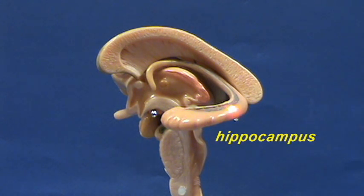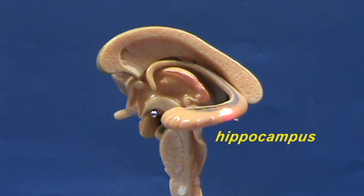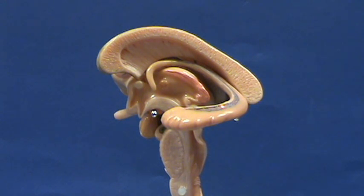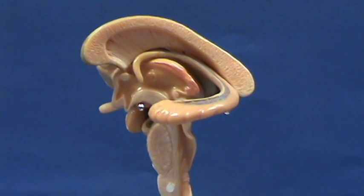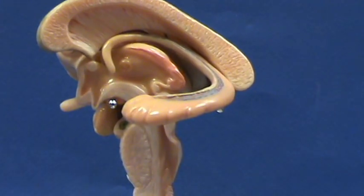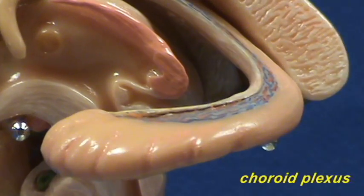The hippocampus you find in the temporal lobe, and it has a very distinct structure which has given rise to its name — hippocampus means seahorse. And this red and blue that you see there represents the choroid plexus.